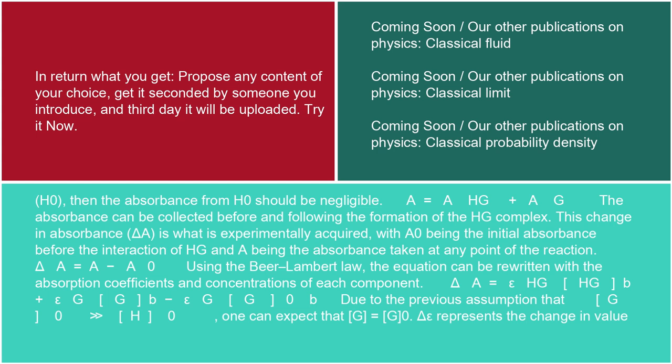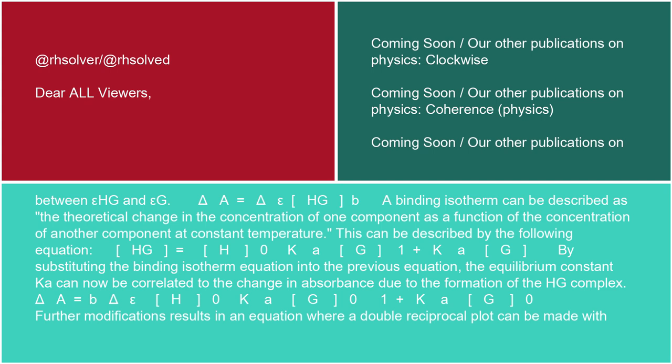ΔA = ε_HG·[HG]·b + ε_G·[G]·b − ε_G·[G₀]·b. Due to the previous assumption that G₀ >> H₀, one can expect that [G] ≈ G₀. ΔΕpsilon represents the change in value between ε_HG and ε_G, giving ΔA = Δε·[HG]·b. A binding isotherm can be described as the theoretical change in the concentration of one component as a function of the concentration of another component at constant temperature.